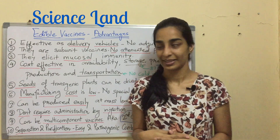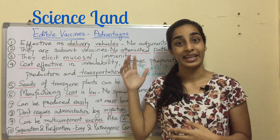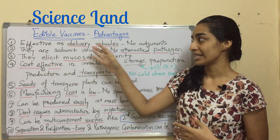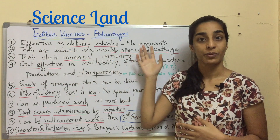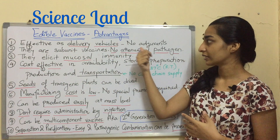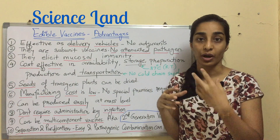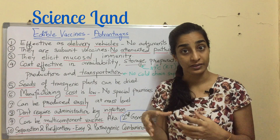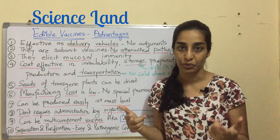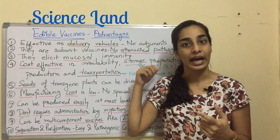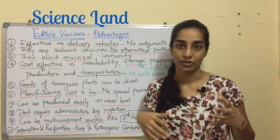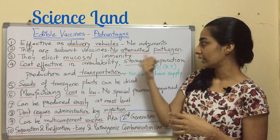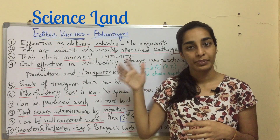Let's start. First, we are going to talk about the advantages of edible vaccines. They are effective as a delivery vehicle because they don't require adjuvants. Adjuvants are substances which enhance the immune response and are normally used in traditional vaccines.